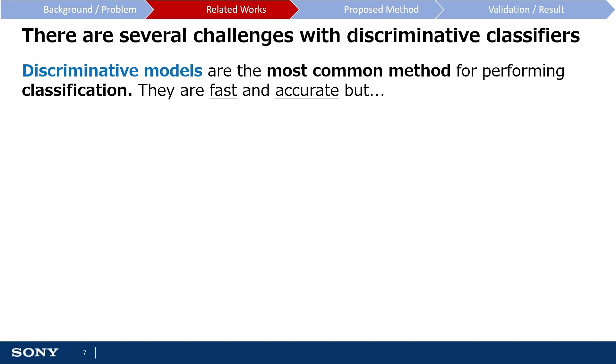Discriminative models are by far the most common method for performing classification in machine learning. This is because they are both fast and accurate, having surpassed humans on various image classification benchmarks and achieving real-time inference speeds. However, there are some limitations with discriminative models.